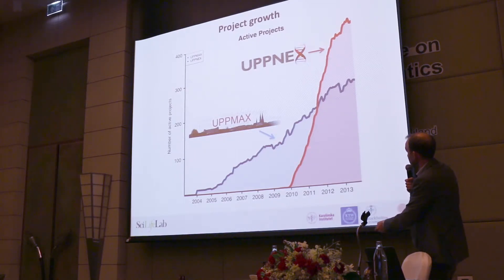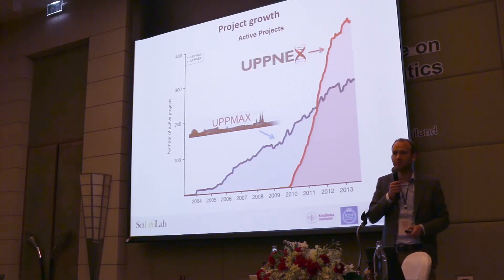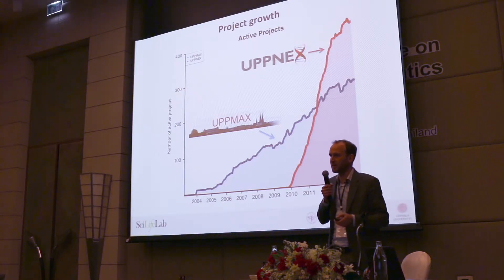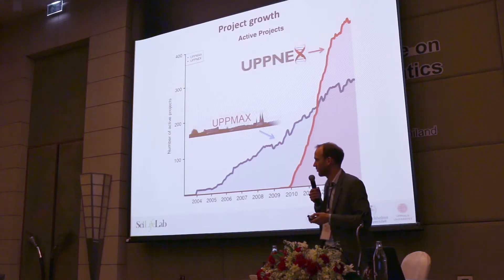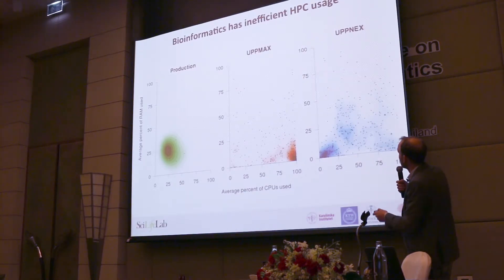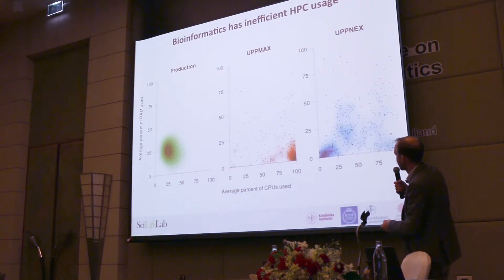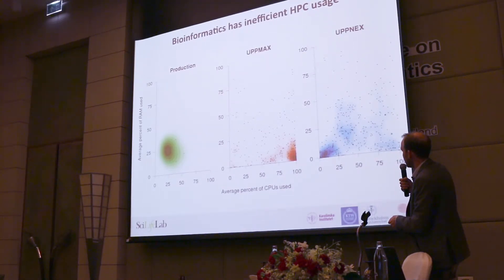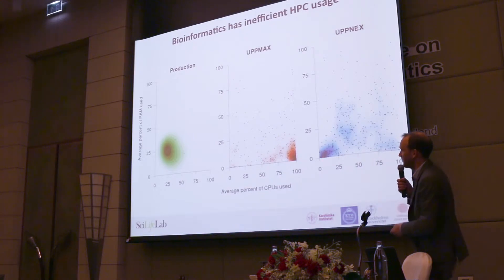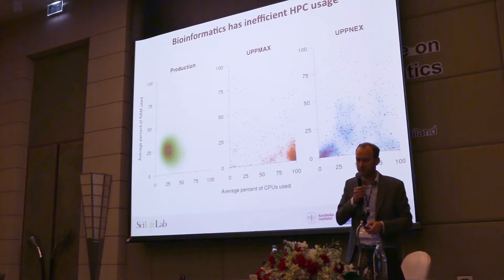This slide shows the enormous explosion in the number of projects — this is Sweden only. In red are biology users; the other colors are traditional users including physics and astronomy. It's really booming. A lot of this is because next-generation sequencing data needs a lot more resources than previously. But looking at bioinformatics efficiency: physics users use all their CPUs; bioinformatics users are often down in the corner using both CPU and RAM very inefficiently. This tells us bioinformatics has a long way to go in using computers as physics does — but we tackle very different problems.